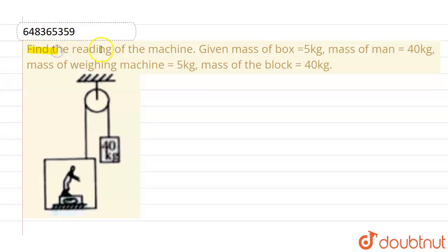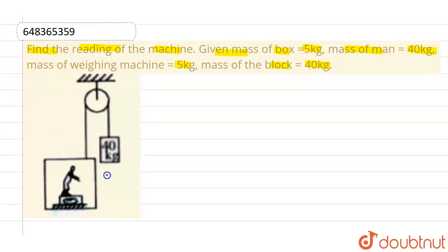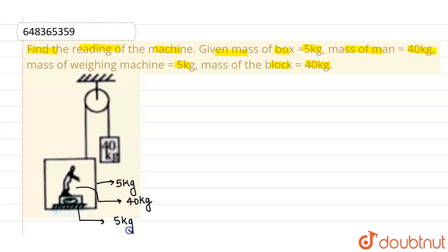This given question asks us to find the reading of the weighing machine. The mass of the box is 5 kg, the mass of the man is 40 kg, the mass of the weighing machine is 5 kg, and the mass of the block is 40 kg.